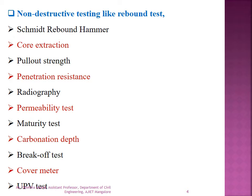The different non-destructive tests done on hardened concrete include: rebound hammer test, core extraction, pullout strength, penetration resistance, radiography, permeability test, maturity test, carbonation depth, break-off test, cover meter, and ultrasonic pulse velocity (UPV) test. Out of these, rebound hammer, core extraction, pullout strength, penetration resistance, and UPV test will be discussed in detail, as they have their own importance in determining the strength and properties of hardened concrete.